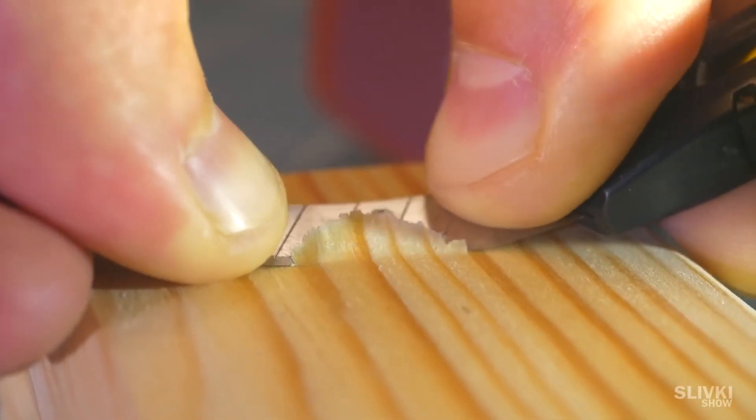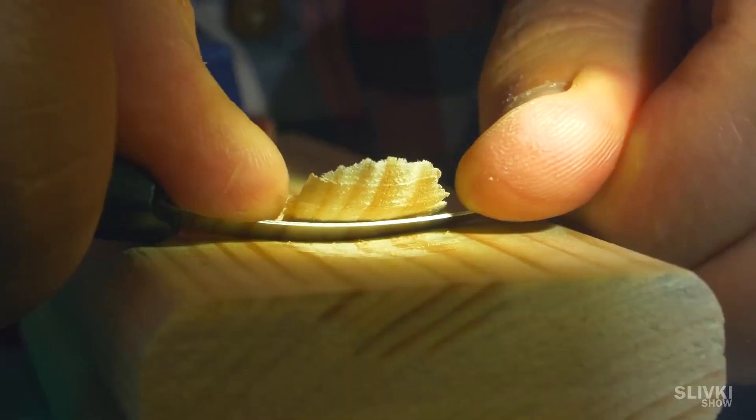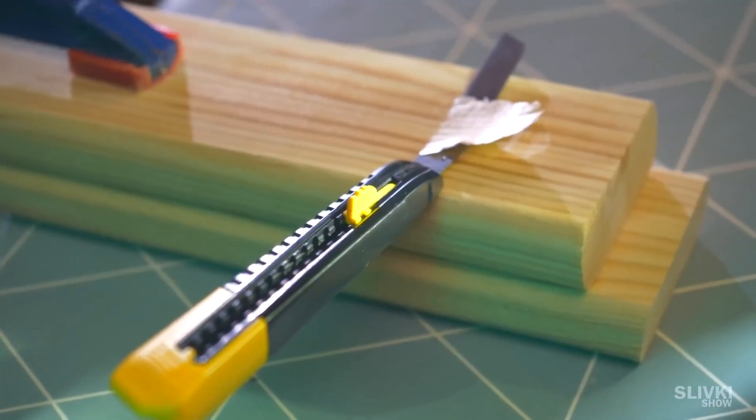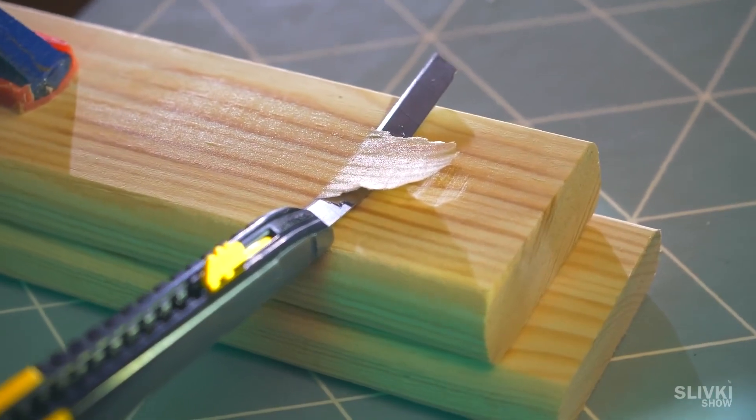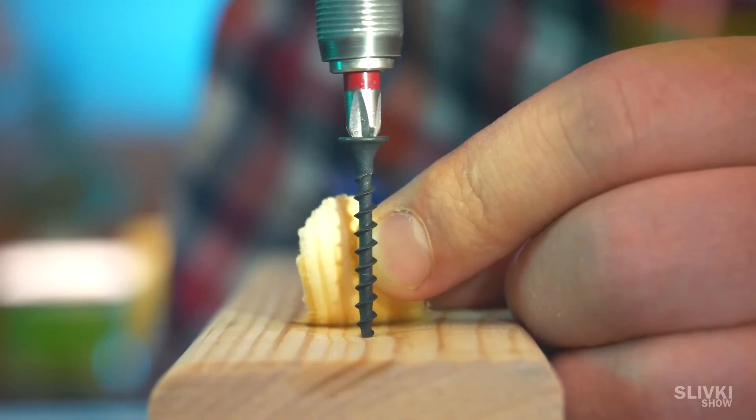We need to make everything carefully so the tree won't break and we won't cut ourselves. In the end, we get this kind of tail, which we unfold and screw a bolt there.